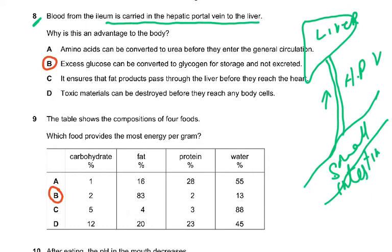The correct answer is: excess glucose can be converted to glycogen for storage. Otherwise, glucose not stored and not used would need to be removed. By storing it as glycogen, you don't need to eat very frequently — the glycogen store comes into play during fasting, such as eating early in the morning and then at sunset.